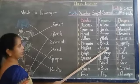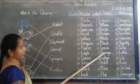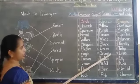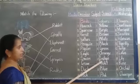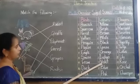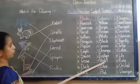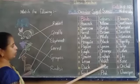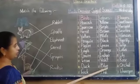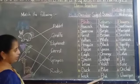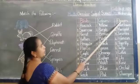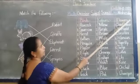Green. G-R-E-E-N. Green. Orange. O-R-A-N-G-E. Orange. Indigo. I-N-D-I-G-O. Indigo. Violet. V-I-O-L-E-T. Violet. Blue. B-L-U-E. Blue. Pink. P-I-N-K. Pink.